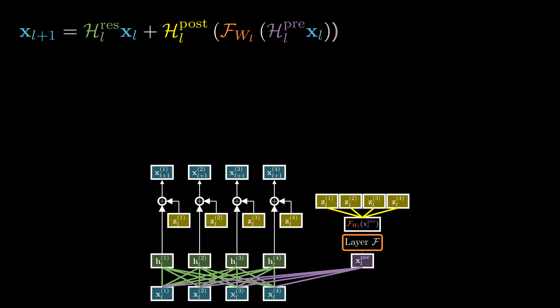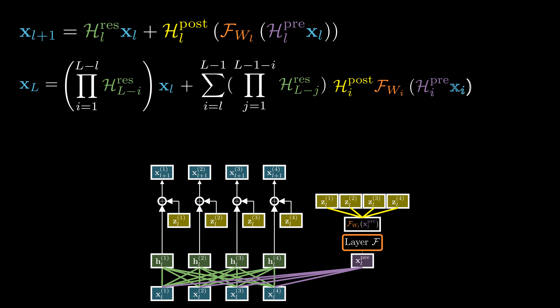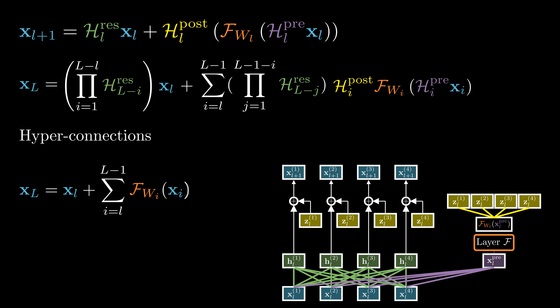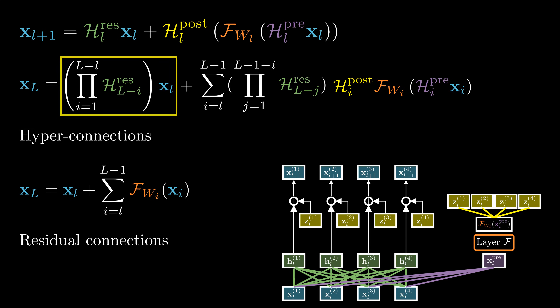Here is the equation for how a single layer of hyperconnections computes its output. Recursively extending to multiple layers, we can represent the features at a deeper level as two terms: the first corresponds to the features at a shallow layer successively transformed by the feature mixing matrices across intermediate layers, and the second consists of the sum of the outputs from all previous residual functions. In standard residual connections, we have an identity mapping, which is essential for facilitating smooth information propagation. But in hyperconnections, we have a composite mapping of all the feature mixing matrices between the shallow and deep layers.